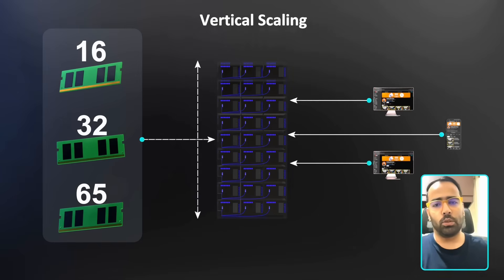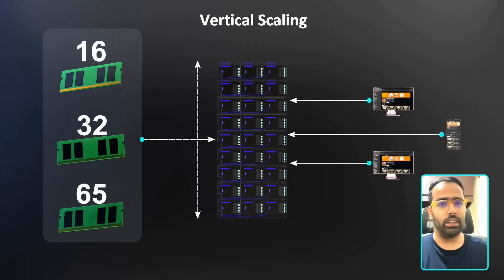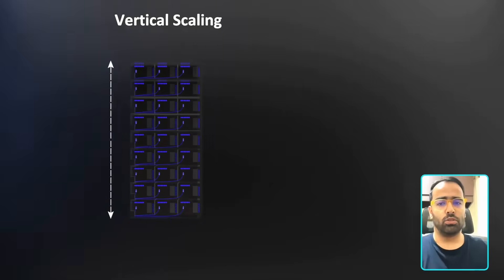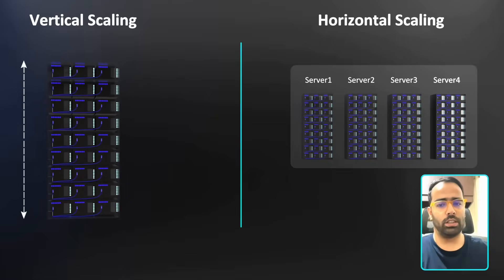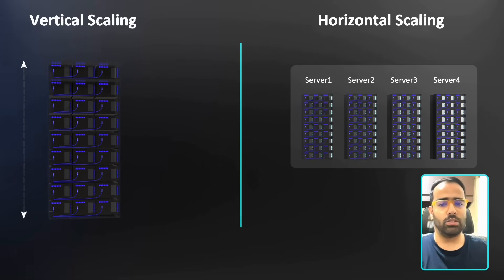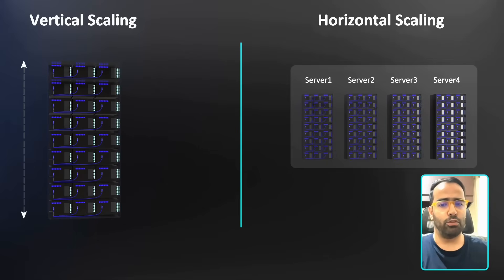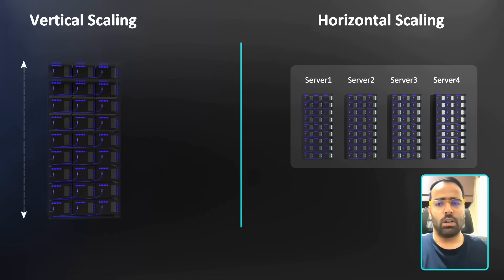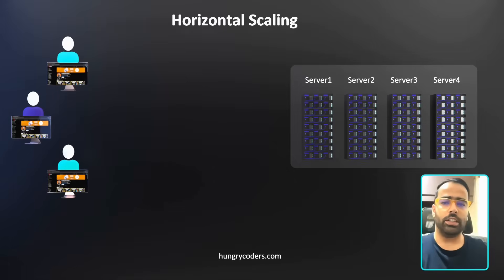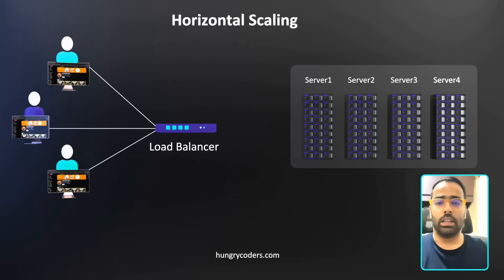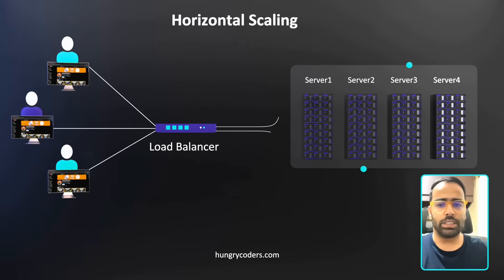Vertical scaling has a limit — you can't keep adding RAM forever, and it's not optimal to rely on a single server. If that server fails or has a disaster, your whole application goes down. So the next step is horizontal scaling: instead of one big server, you have four small or large servers, and you keep adding based on traffic. With multiple servers, you need something in between — a load balancer.